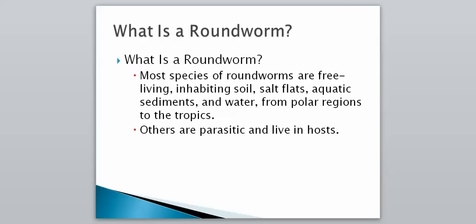So what is a roundworm? Most species of roundworms are free-living, inhabiting soil, salt flats, aquatic sediments, and water, and they live from polar regions to the tropics — so they live in a wide, wide range of places. However, some are parasitic and will live inside hosts.